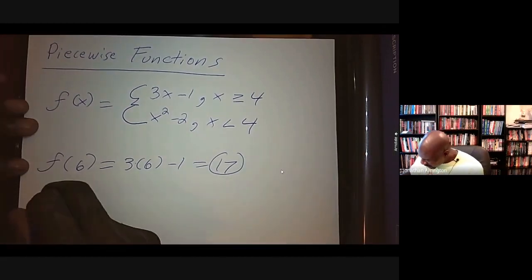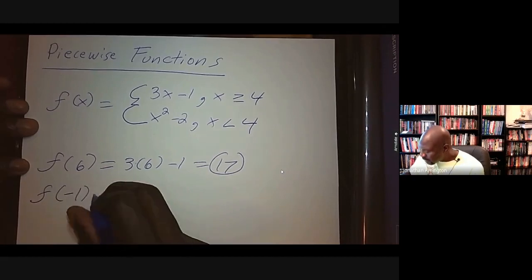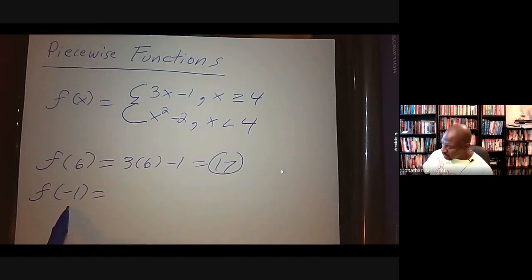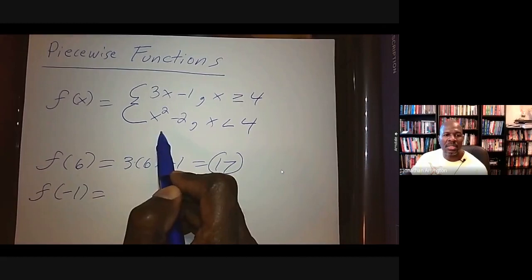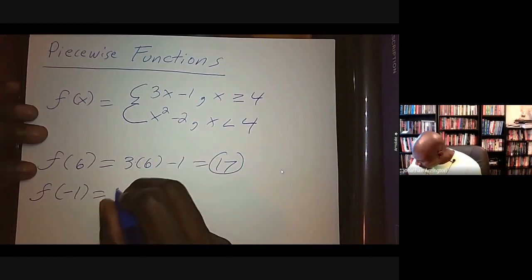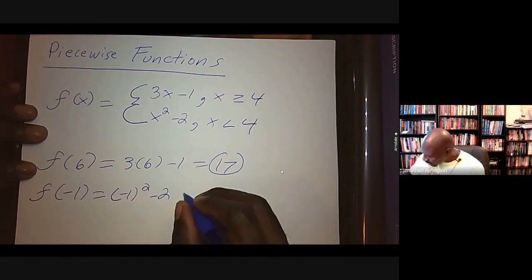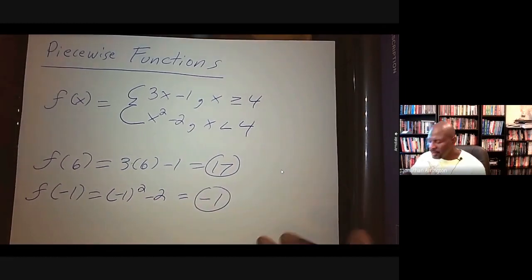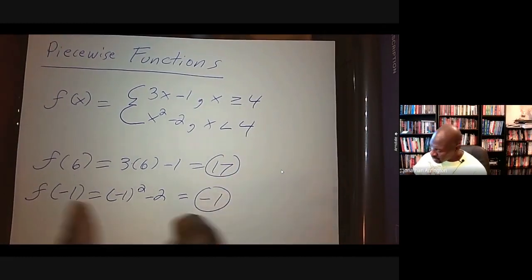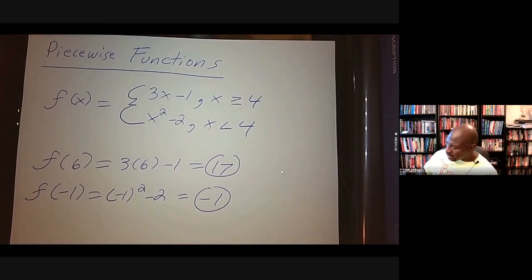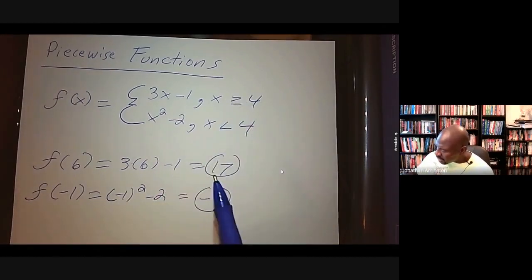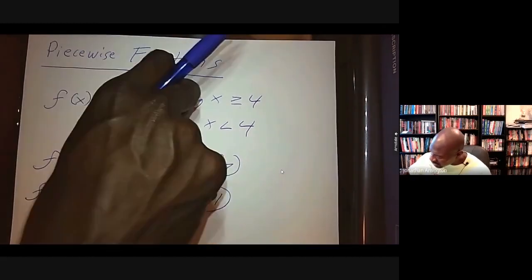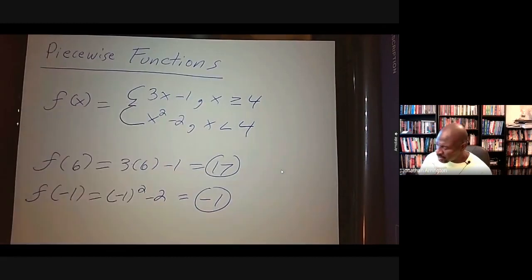If I want to find f(-1) of the same function, I look at which piece negative one fits. Negative one is less than four, so f(-1) = (-1)² - 2 = 1 - 2 = -1. That is how you evaluate piecewise functions. People sometimes think you must plug the number into both pieces, but that's incorrect — you only plug it into the piece where the number satisfies that piece's condition.